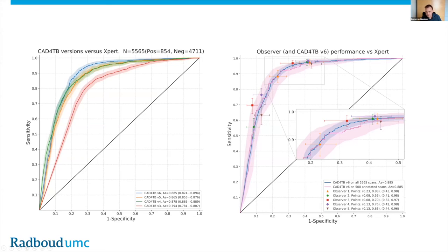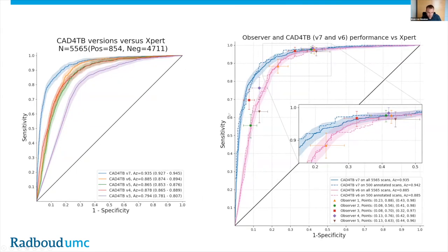Here's a sneak preview of version 7 on the same dataset. Version 7 has again much better performance: it can find 80% of TB cases with only a 5% false alarm rate, and almost 100% of TB cases with only a 25% false alarm rate. So you would need to do fewer expert tests to find all TB cases. The new software is now actually outperforming all human readers. These results are from one large dataset from Pakistan, but you should always test on your own data to find out if the software works in your setting.